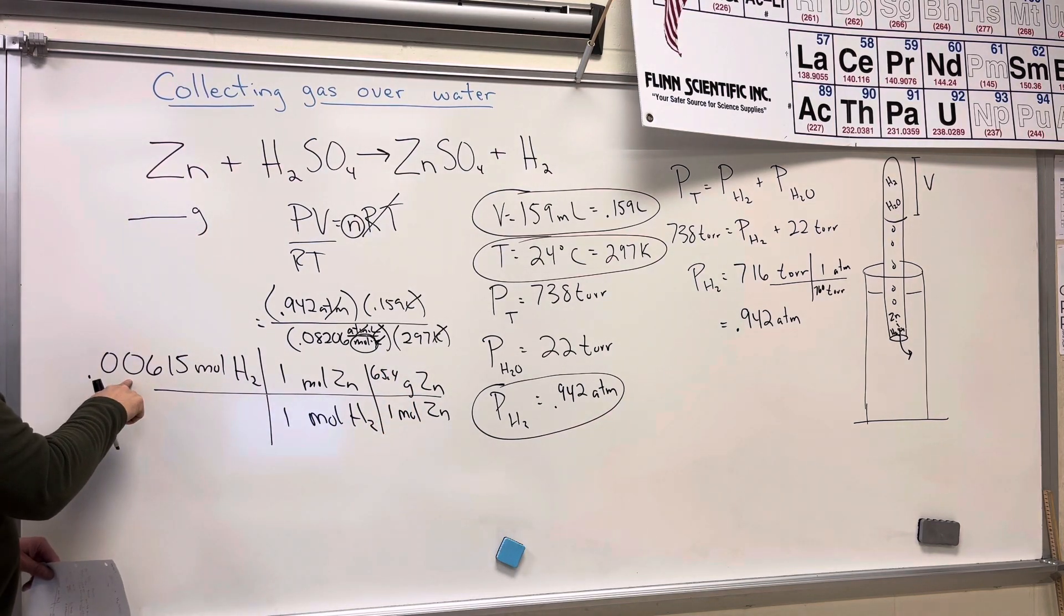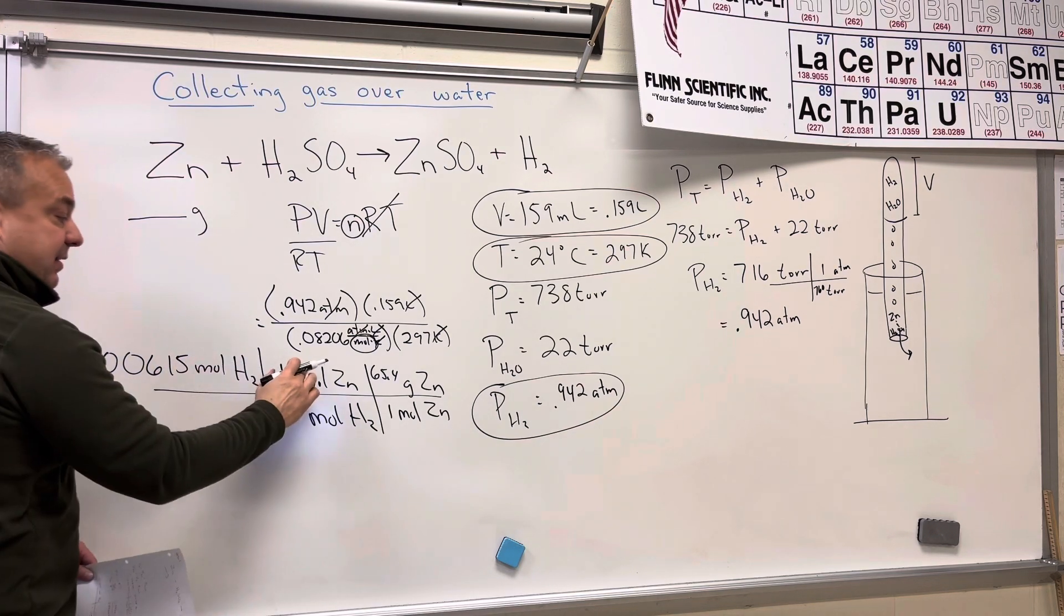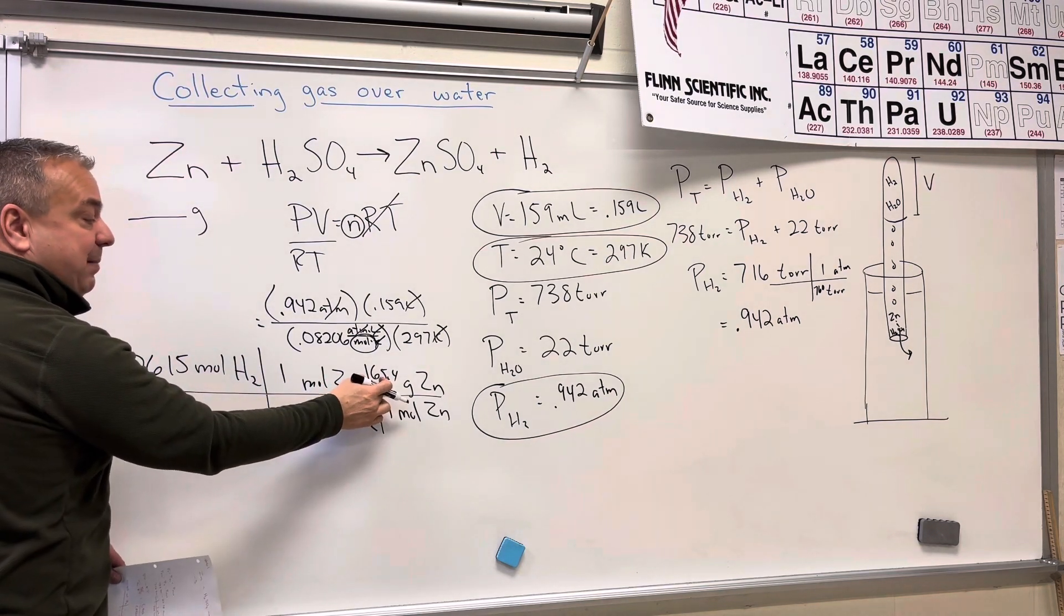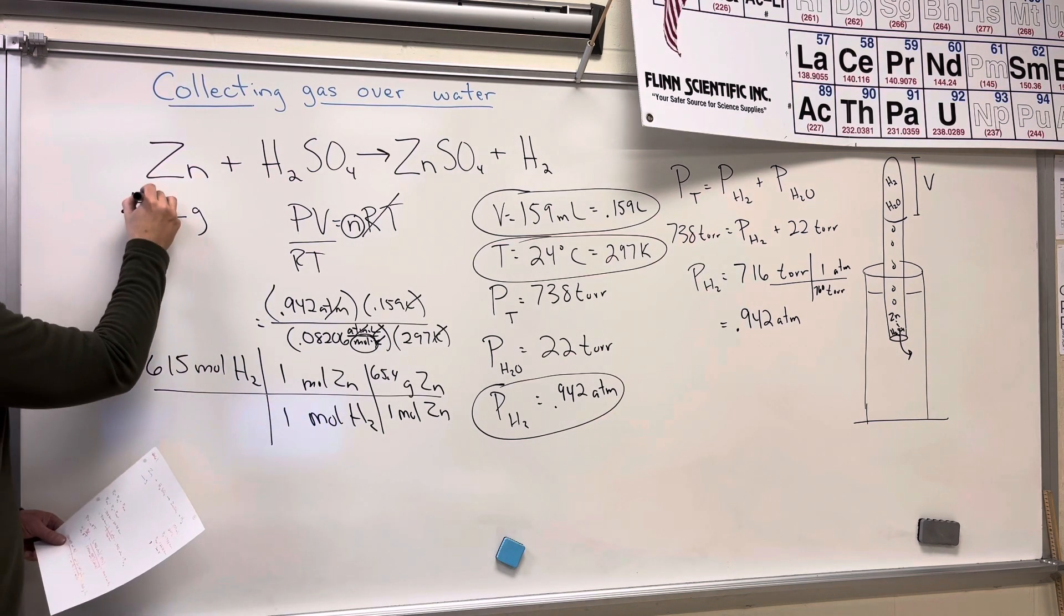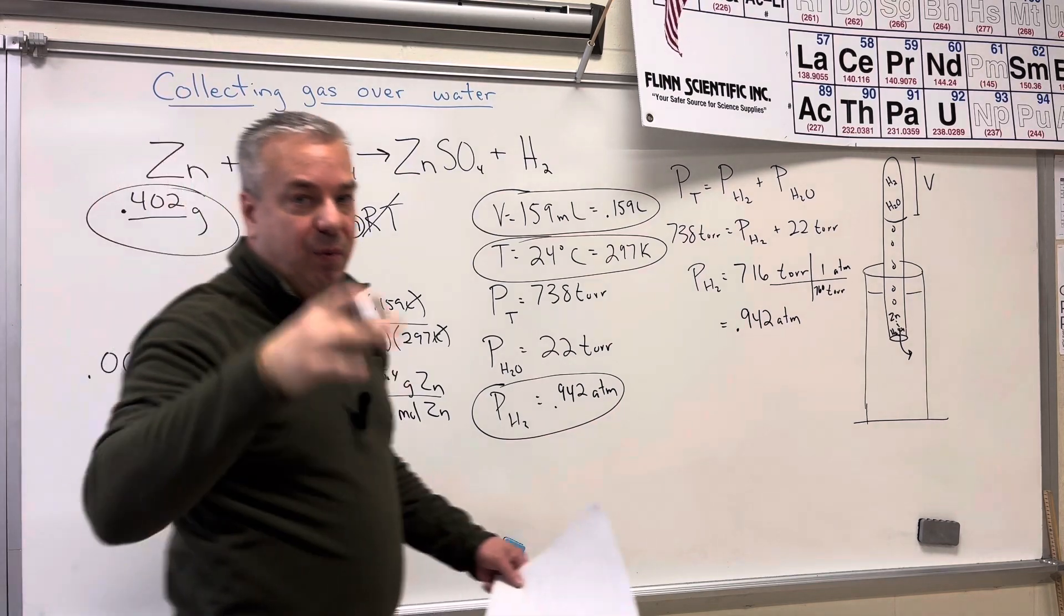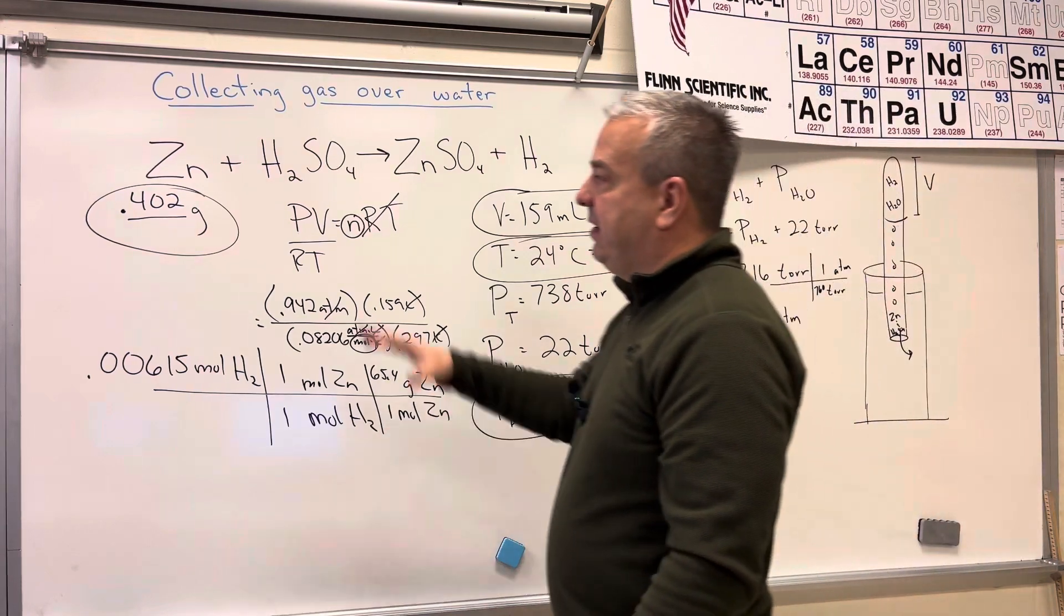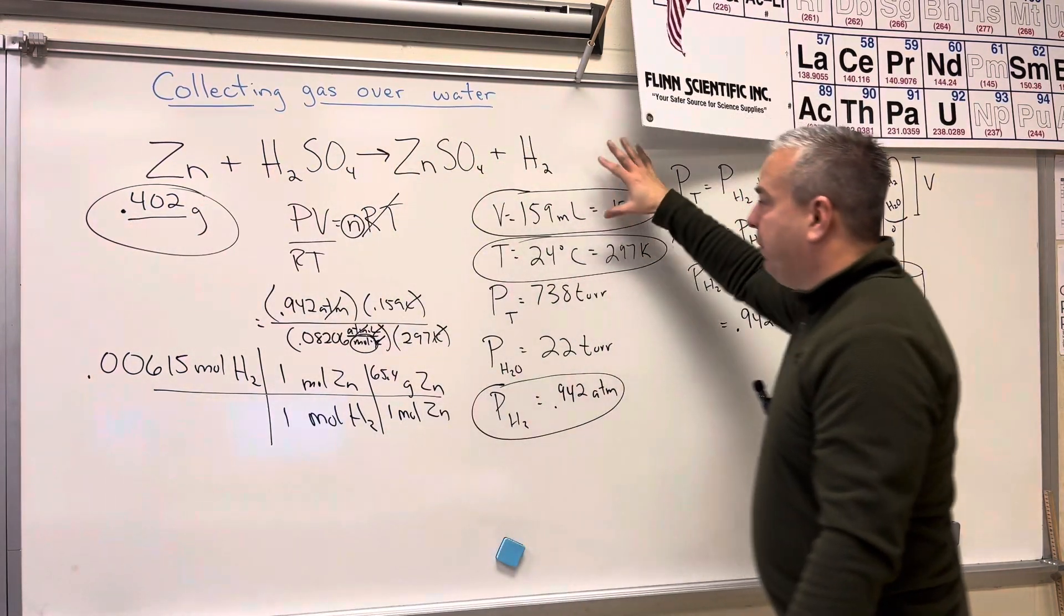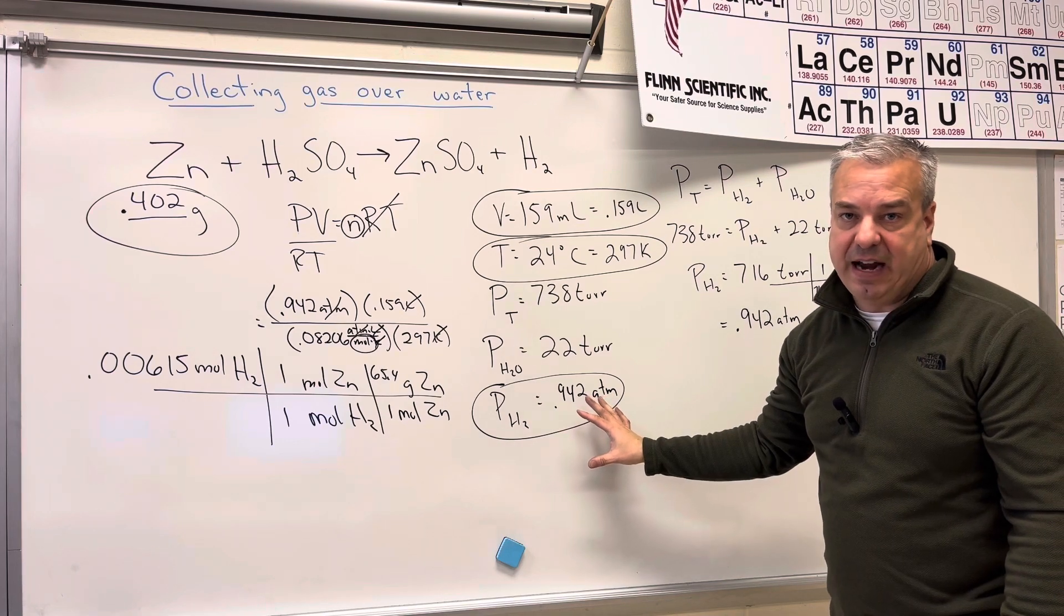And if I take that 0.00615, hopefully leaving everything in the calculator, times one divided by one times 65.4 will give me an answer of 0.402 grams of zinc, which is our answer. So 0.402 grams of zinc needs to react to form this volume, temperature, and pressure of hydrogen gas.